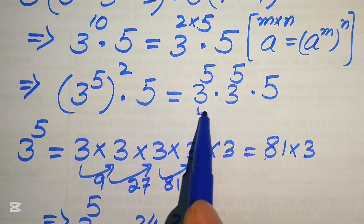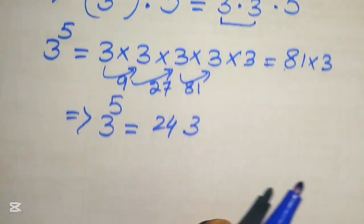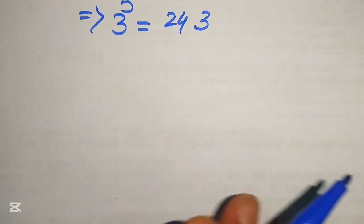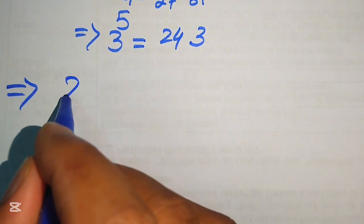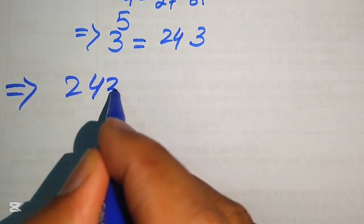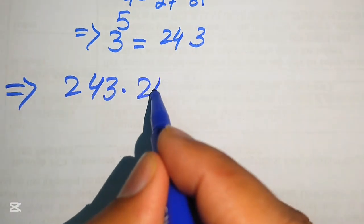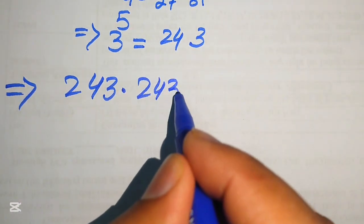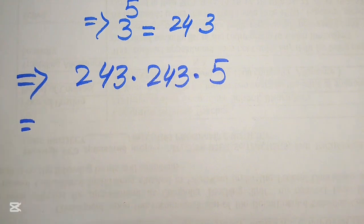Now we substitute back the value of 3 to the power of 5. The expression becomes 243 multiplied by 243, multiplied by 5. In the next step, we need to multiply these two larger numbers.